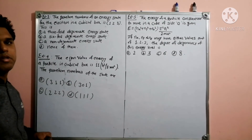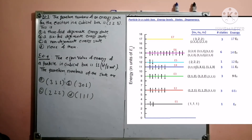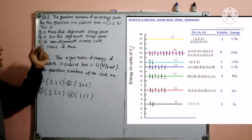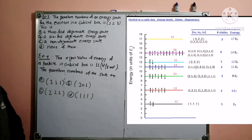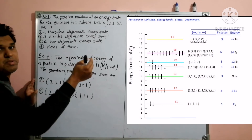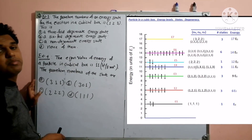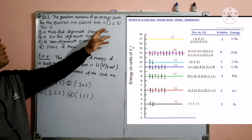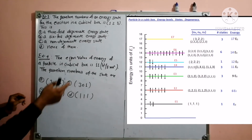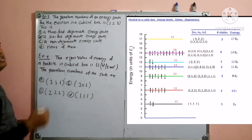Problem number three: the quantum numbers of the energy state for the electron in a cubical box are (1,2,3). The options are: A) three-fold degenerate, B) six-fold degenerate, C) non-degenerate, D) none of these. According to the energy level diagram for a particle in a 3D cubical box, the combination (1,2,3) gives a six-fold degenerate energy level. So our answer is B, six-fold degenerate.